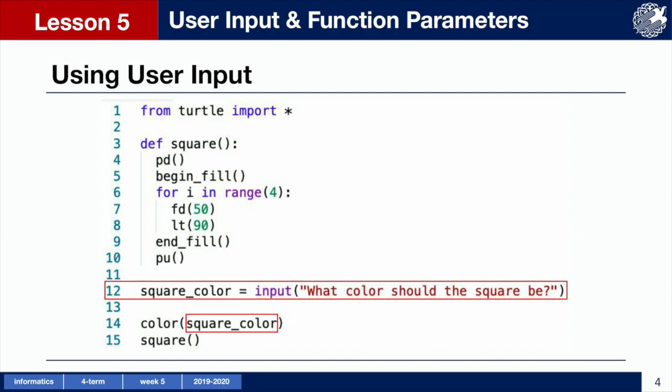Just a quick note: we are using the variable named squareColor instead of just color because color is a reserved word in Python. It cannot be used as a variable name because there is already a command using the word color, so we need to choose something else for our variable.